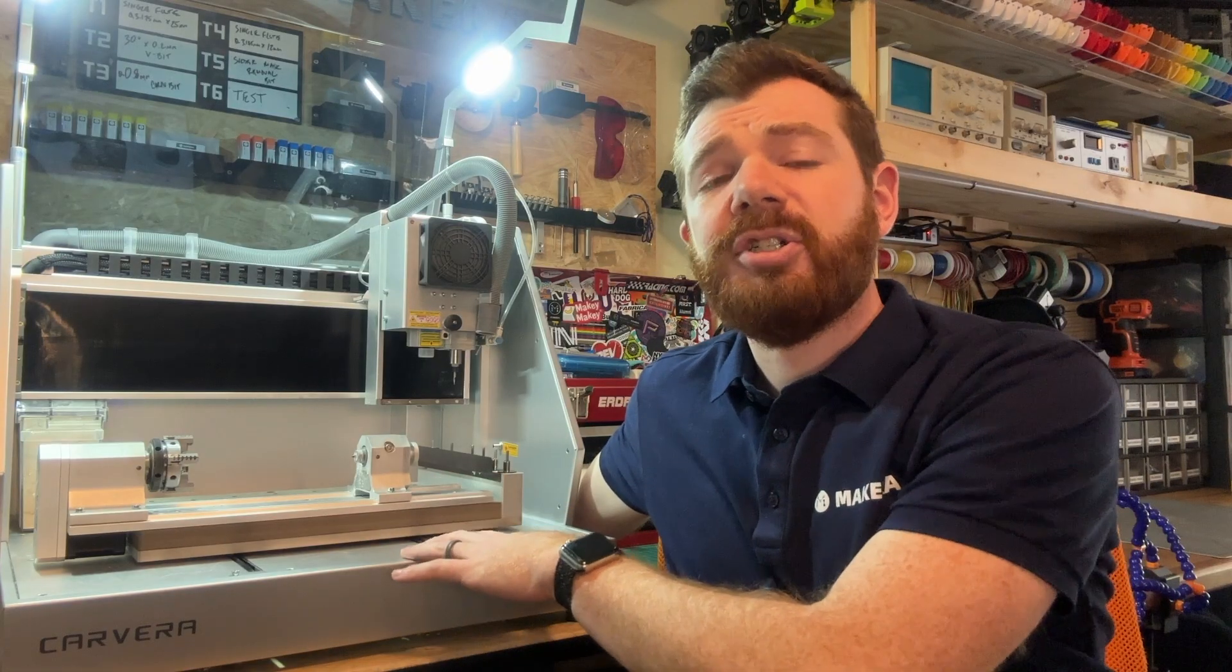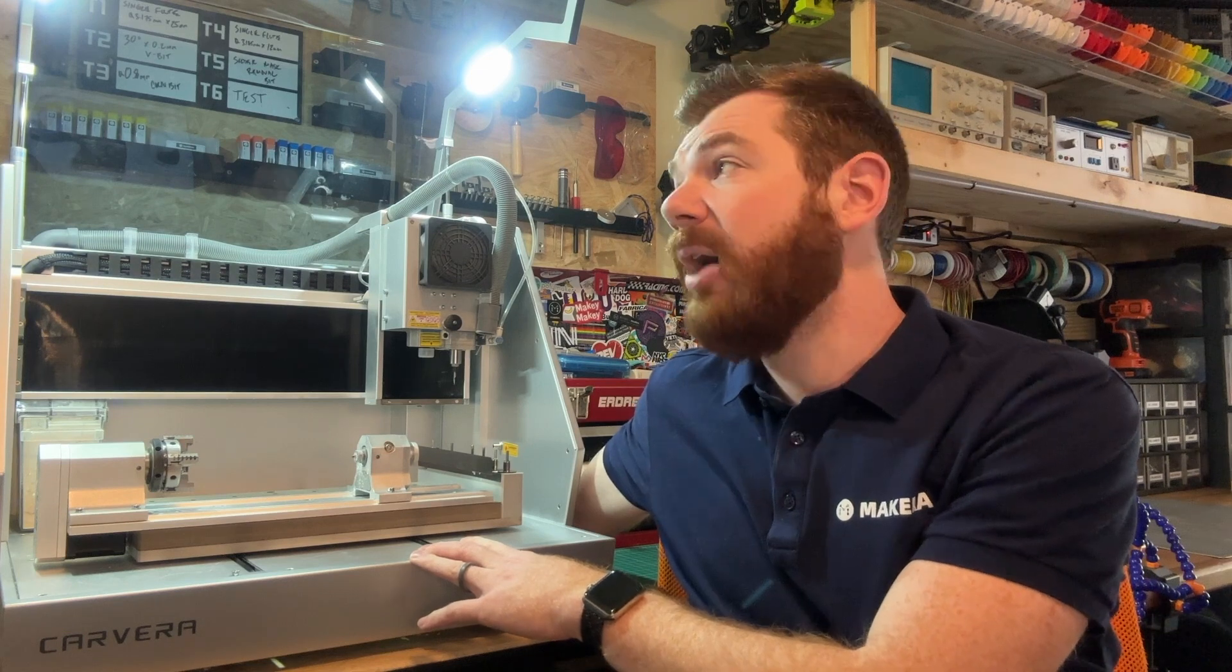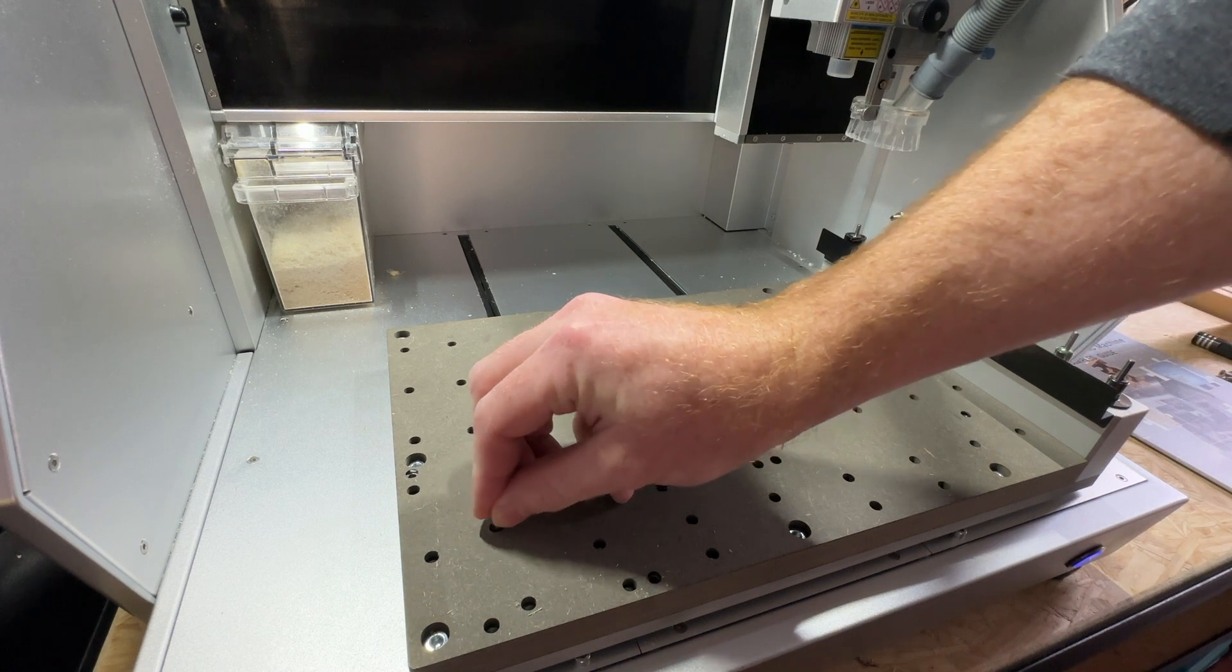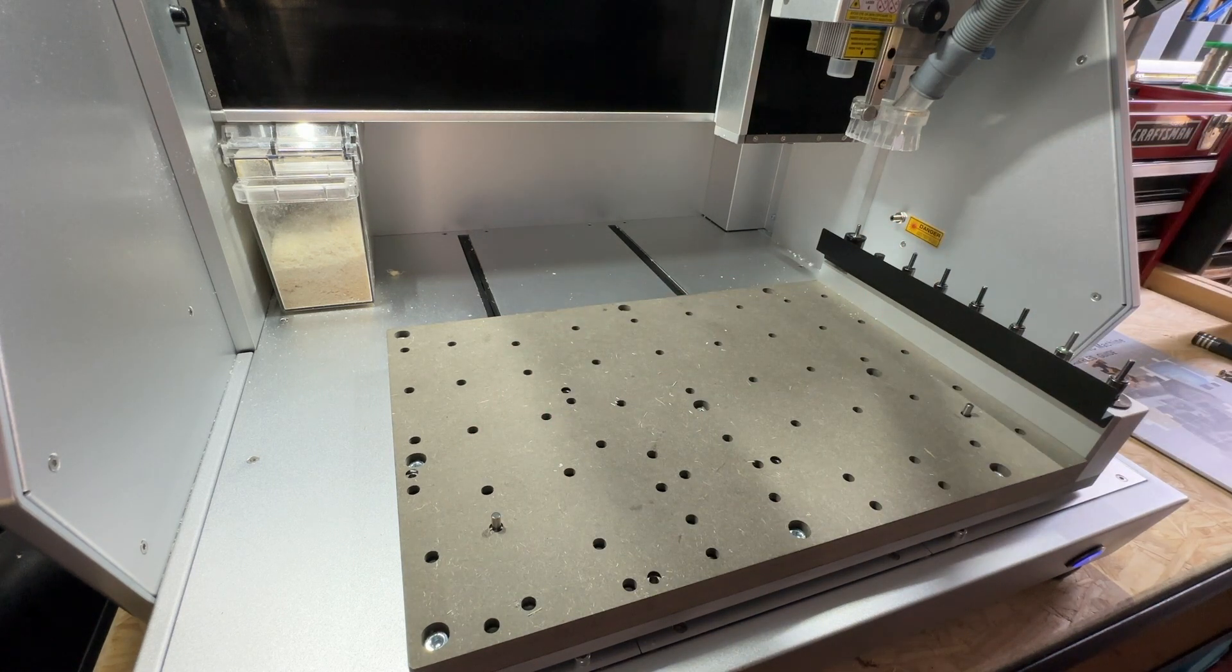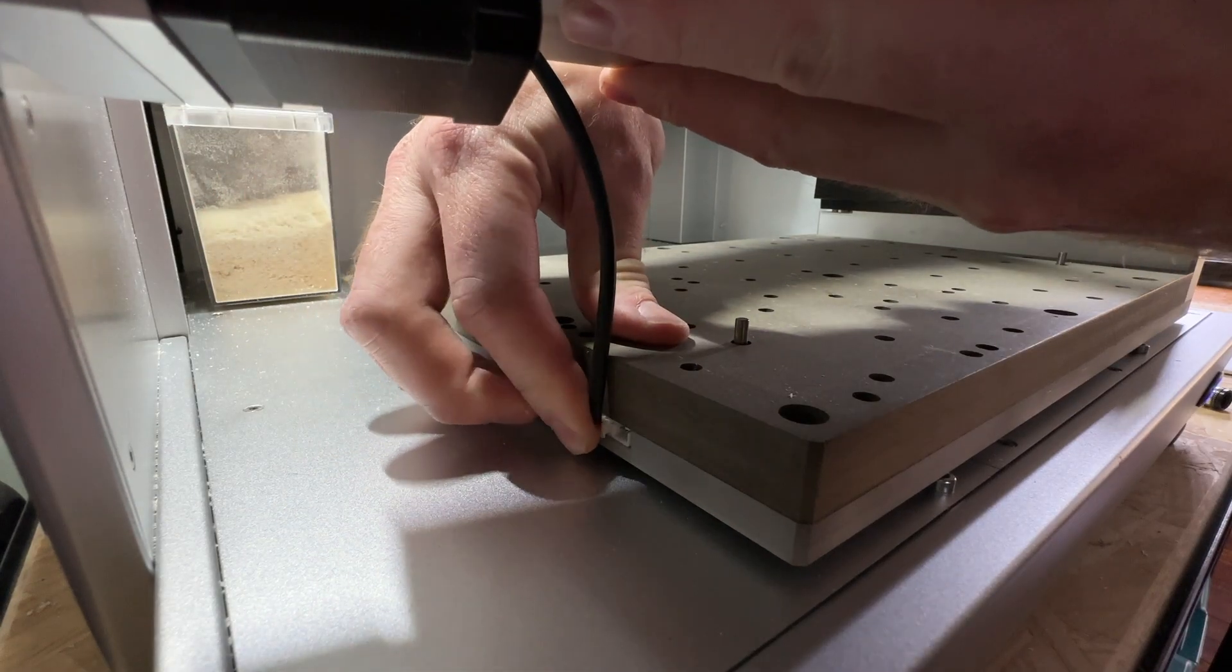First we need to attach the 4th axis module to our Carvera and we want to make sure that the Carvera is powered off before we move forward. It's also important to make sure that there are no corner clamps on your bed. Install two dowel pins in the preset holes towards the front of your bed, then plug in the 4th axis module using the port on the left side of your bed.